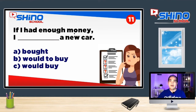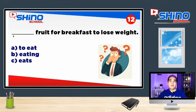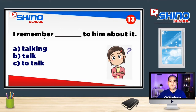Pergunta de número 11: If I had enough money, I ___ a new car. Letra A: bought. Letra B: would to buy. Letra C: would buy. Resposta correta, letra C: would buy. Pergunta de número 12: ___ fruit for breakfast to lose weight. Letra A: to eat. Letra B: eating. Letra C: eats. Resposta correta, letra B: eating. Pergunta de número 13: I remember ___ to him about it. Letra A: talking. Letra B: talk. Letra C: to talk. Resposta correta, letra A: talking.